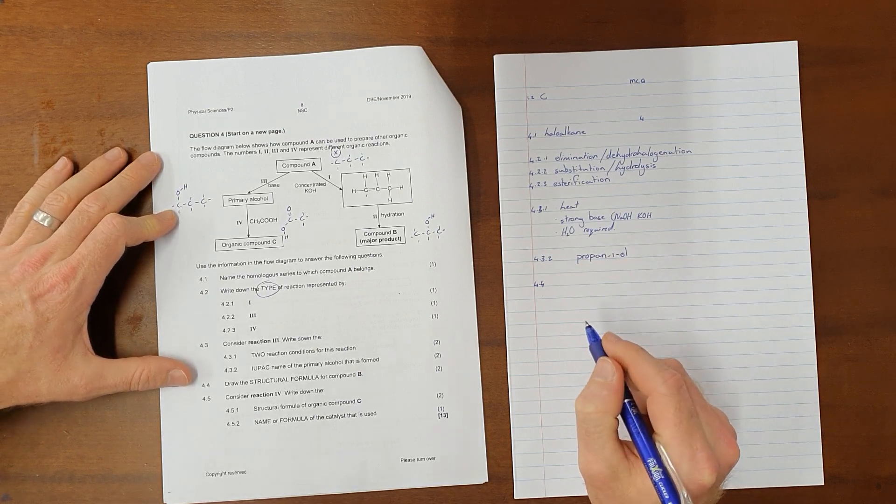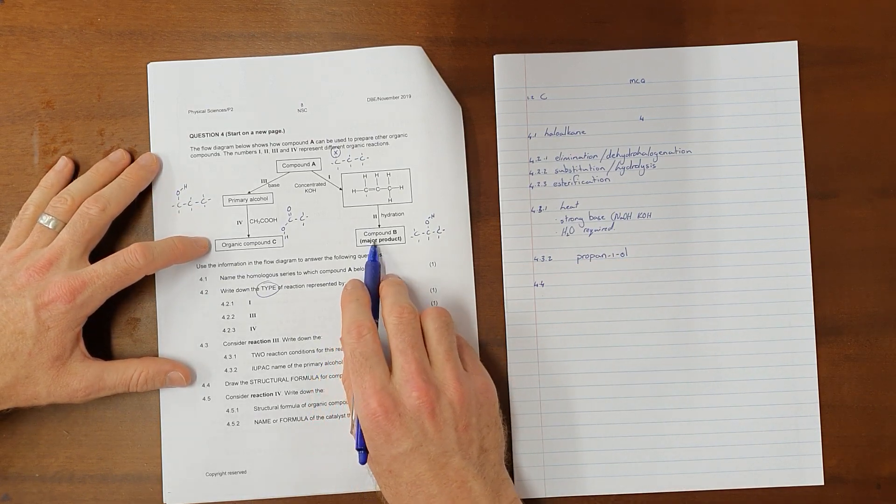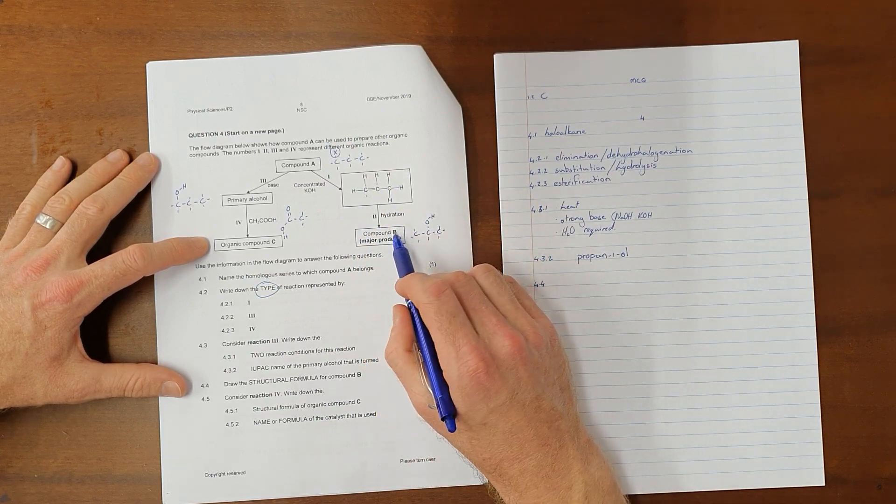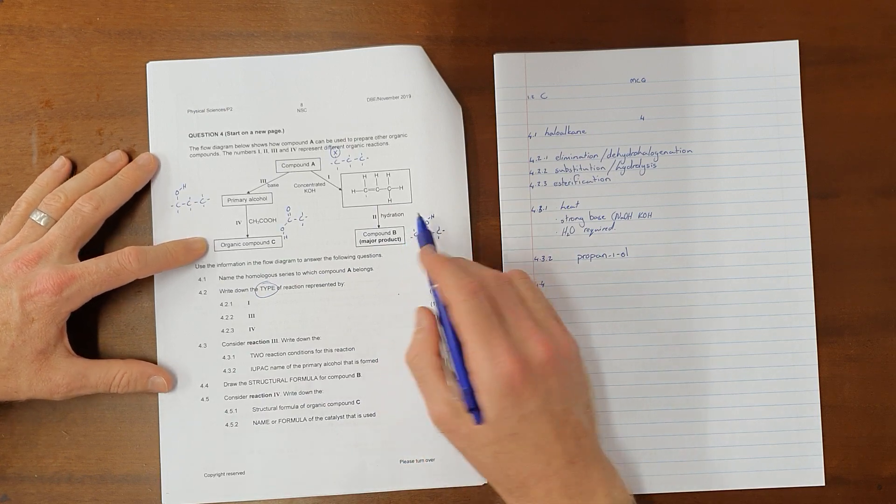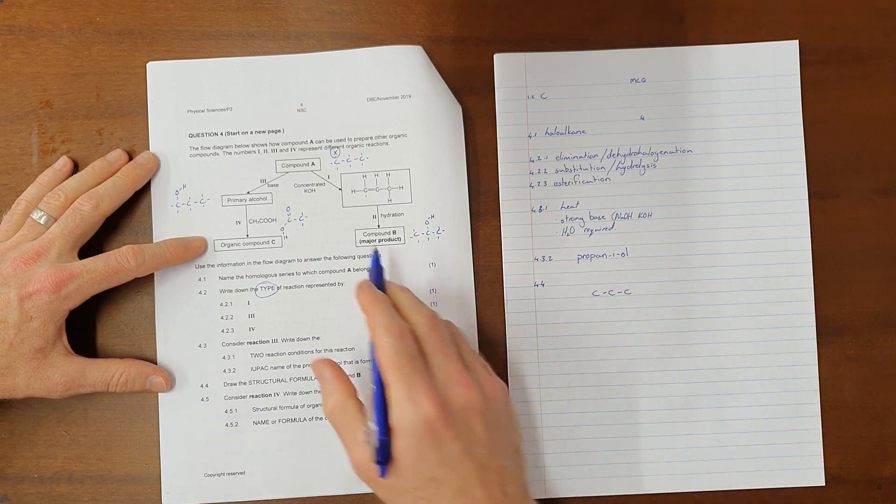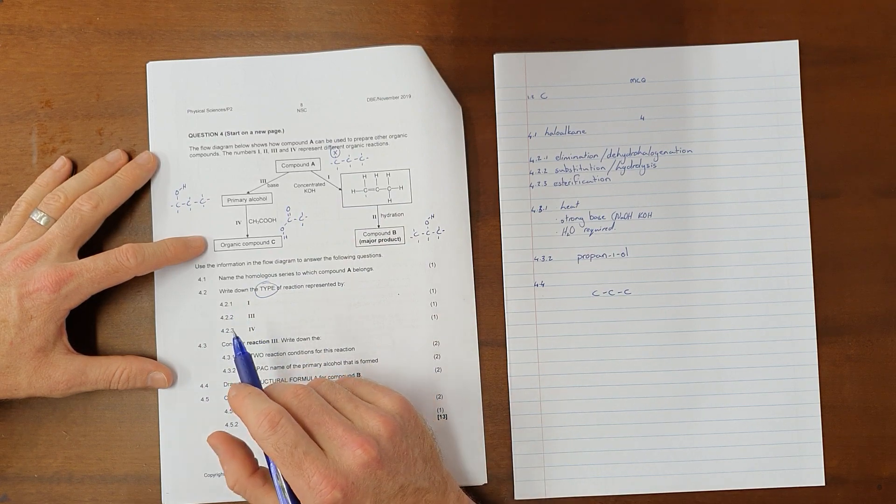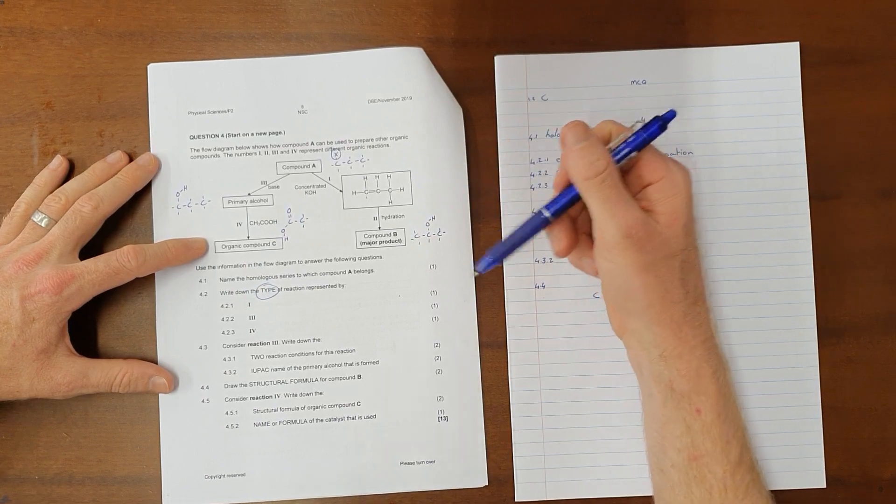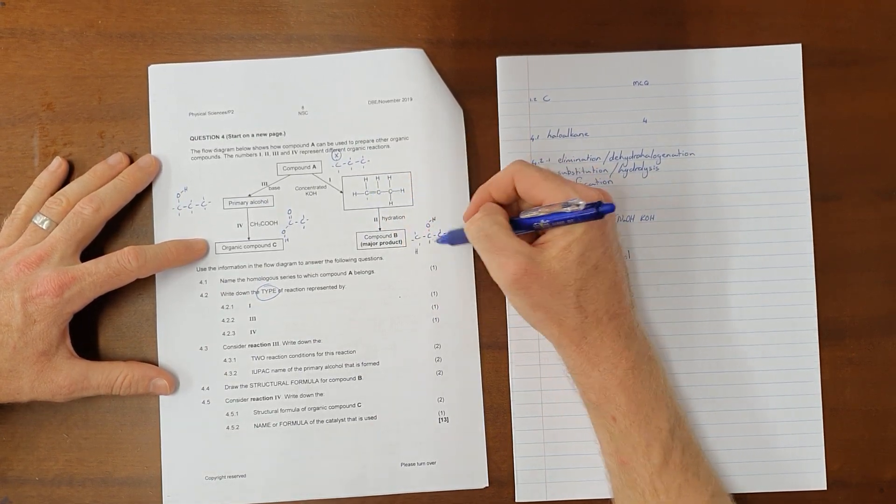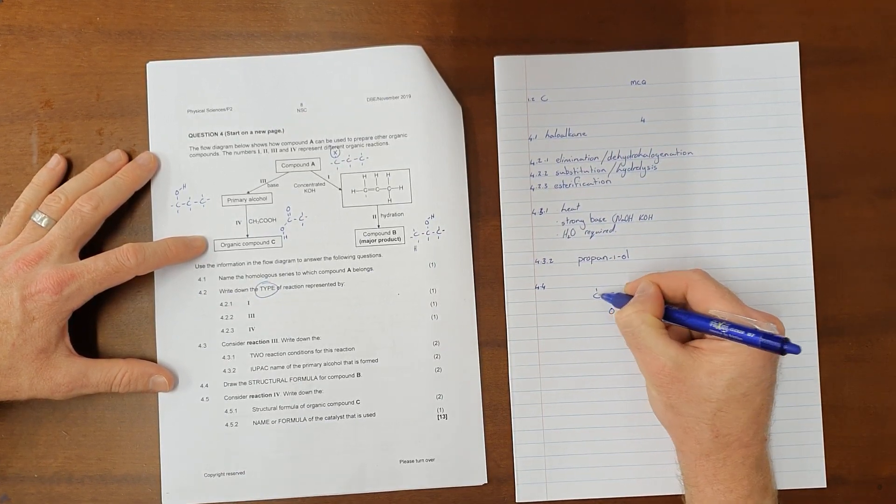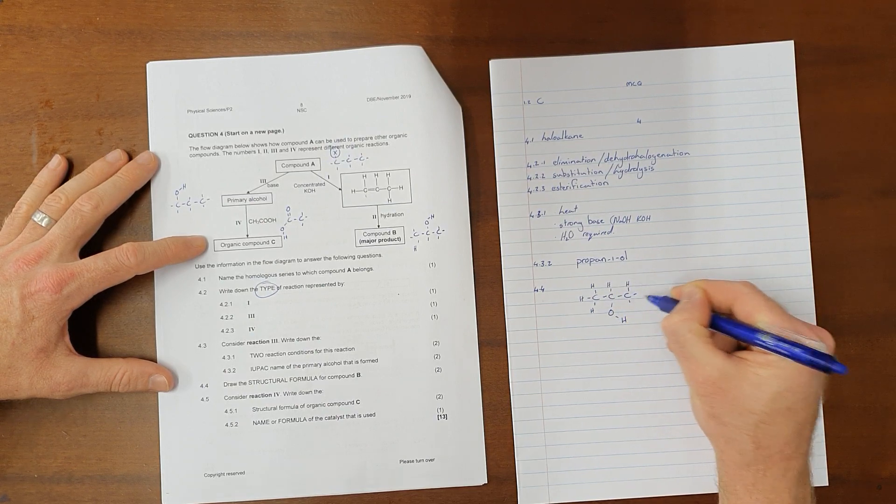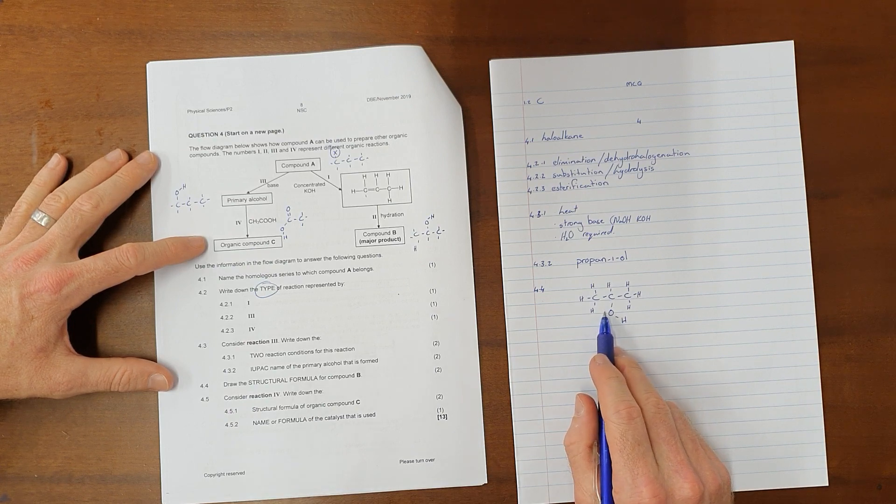Question 4.4 asks, Draw the structural formula for compound B. And, as we've seen, compound B is the result of a reaction where an alkene is converted through a hydration reaction into something, which is obviously going to be an alcohol. We know that a hydration reaction is one where a hydroxyl group is added. The important thing to note here, we can draw our three-carbon chain. The important thing to decide is where that hydroxyl group will be attached. And, once again, we would use Markovnikov's rule here, Markovnikov kind of being the inverse of Zaitsev's rule. Markovnikov's rule will tell us that the hydrogen is going to attach to the carbon that has more hydrogens already, which is carbon number one, which leaves the hydroxyl group to be attached to carbon number two. Very important to remember that whenever you are asked for structural formula in an exam, you must include every single hydrogen to ensure that every carbon has formed its maximum number of four bonds.